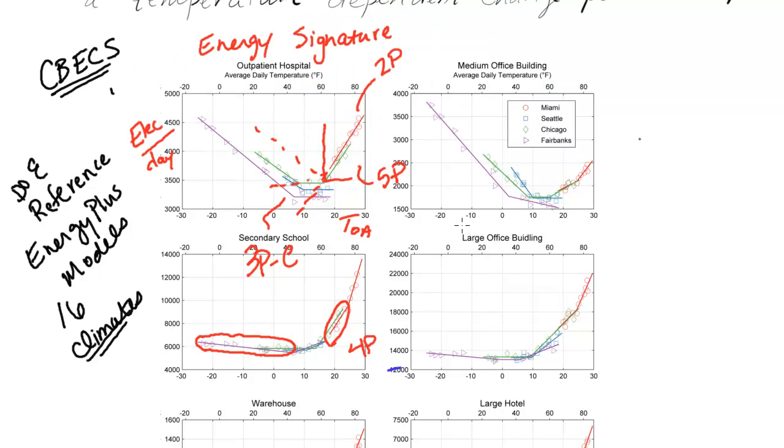And then we also did the same thing for natural gas as the dependent variable, instead of electricity. So this was how we tested and proved that the algorithm worked to how we want it to do, how well we wanted it to do.